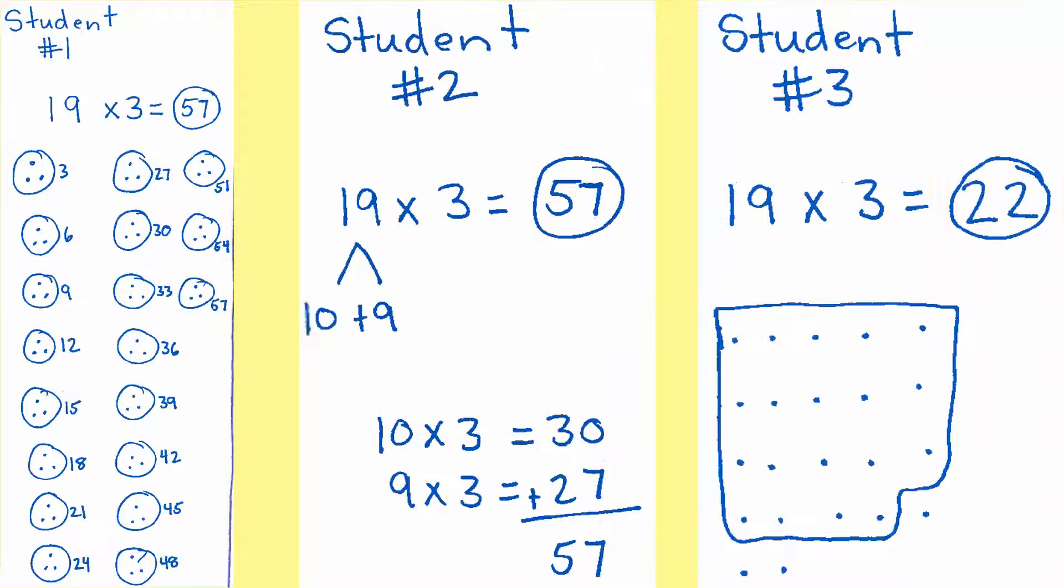So when we look at our three students, we can see that student number two is the one with the best place value concepts, the best understanding, and is on their way to building that procedural fluency. Student number one understands the concepts but hasn't gotten to that automaticity yet. Student number three does not have the concepts yet. They would need to build his understanding of multiplication before getting to that fluent level.